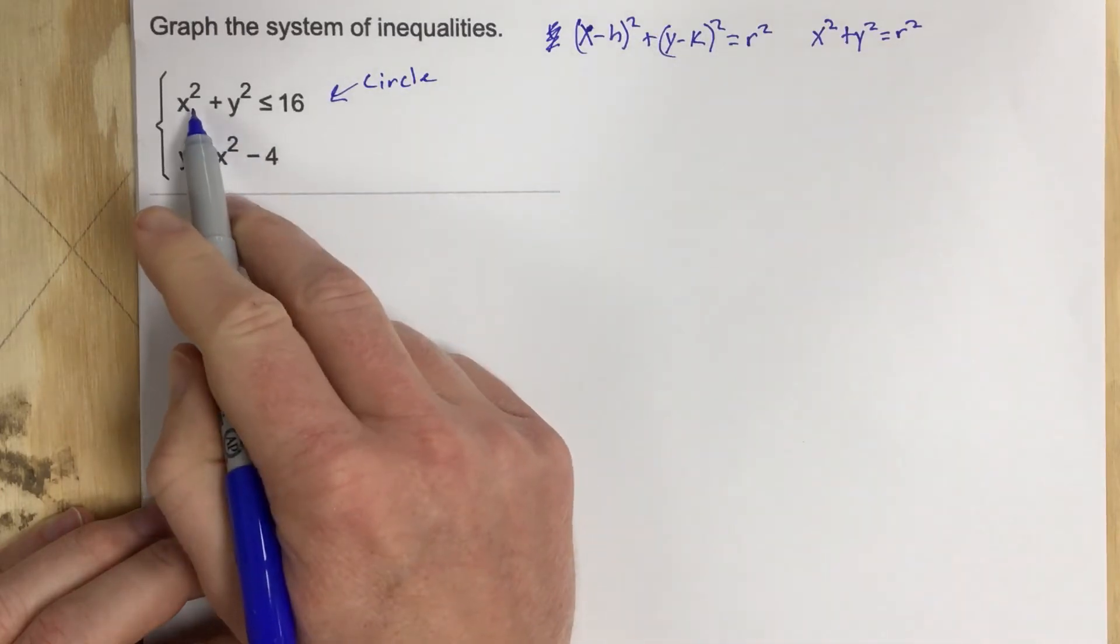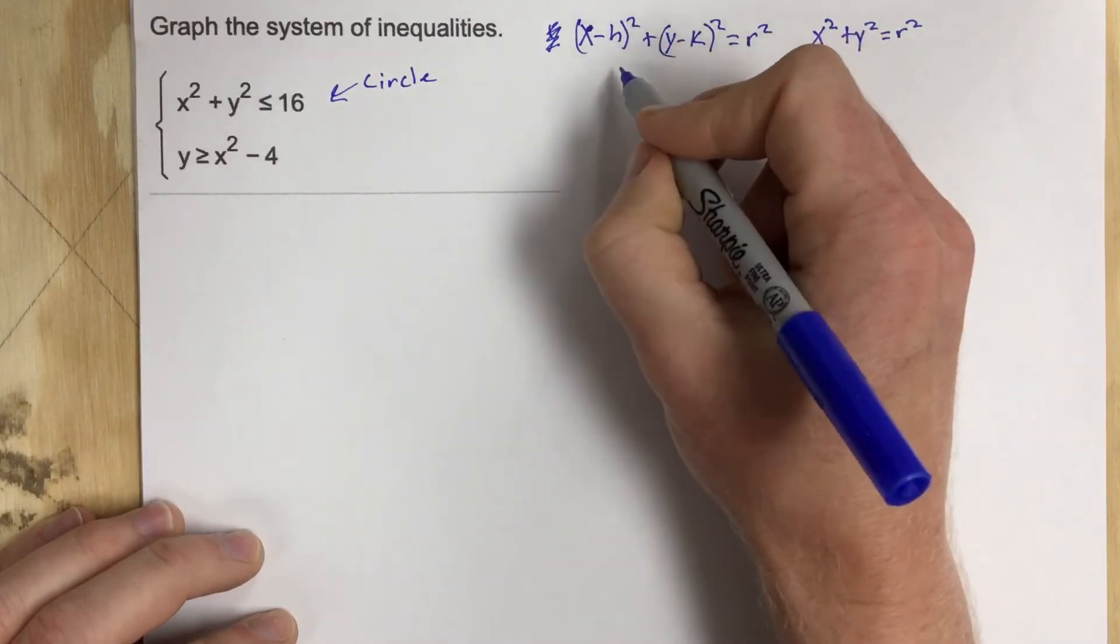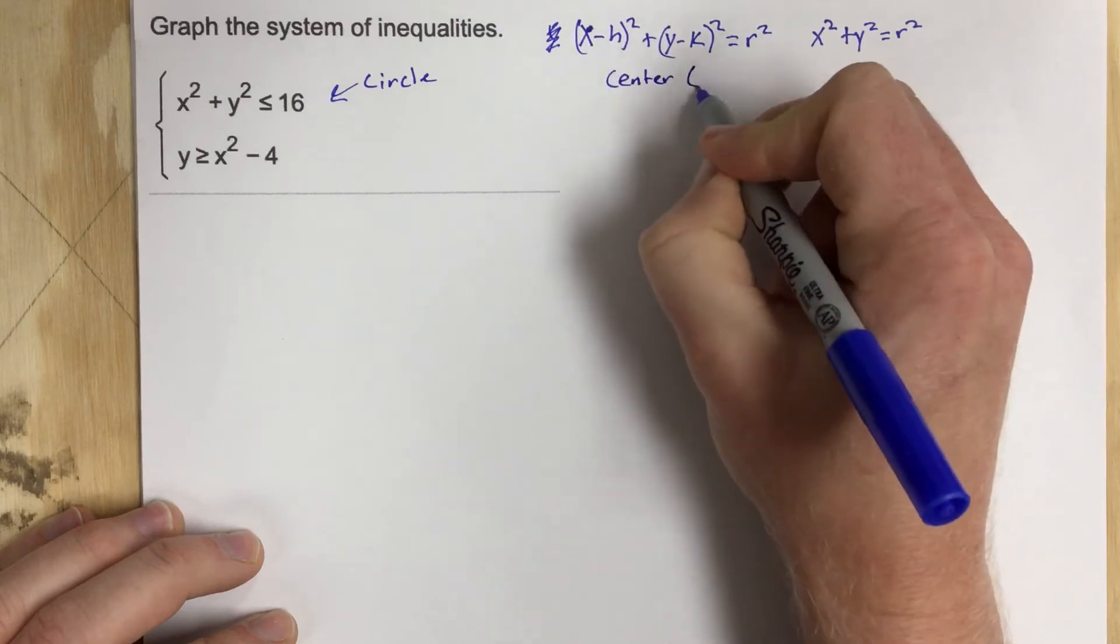Because in this problem, notice that we don't have an h and a k. Well that means that h and k are both 0. So we can say that the center for that circle is 0, 0.